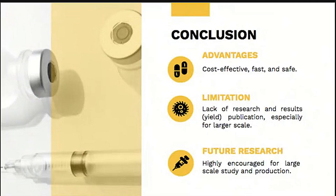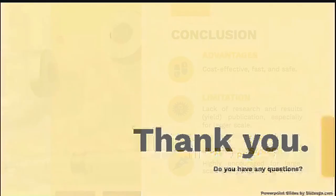To sum it up, the usage of insect cells for avian influenza vaccine has the advantage of being cost-effective, enabling fast production, and eliminating safety concerns. Regardless, due to the lack of research and results publication, future research is highly encouraged to conduct large-scale studies and VLP production for a more in-depth discussion regarding this topic. Thank you.